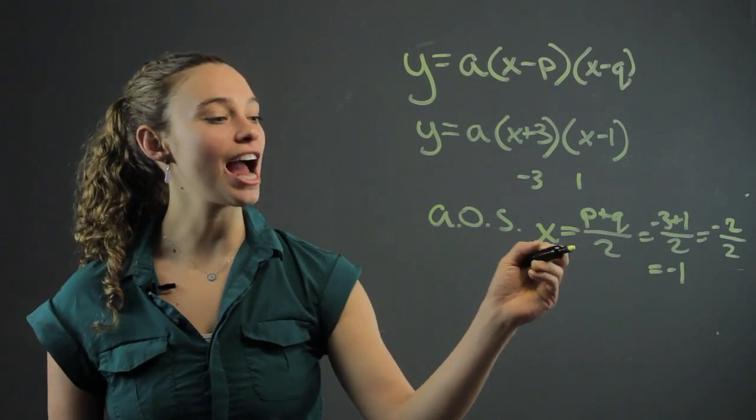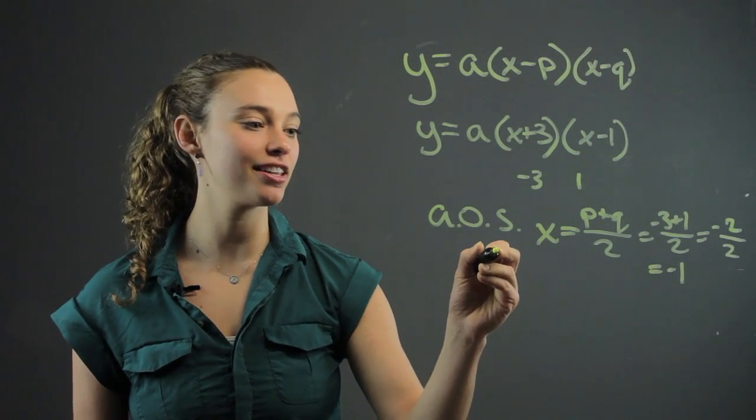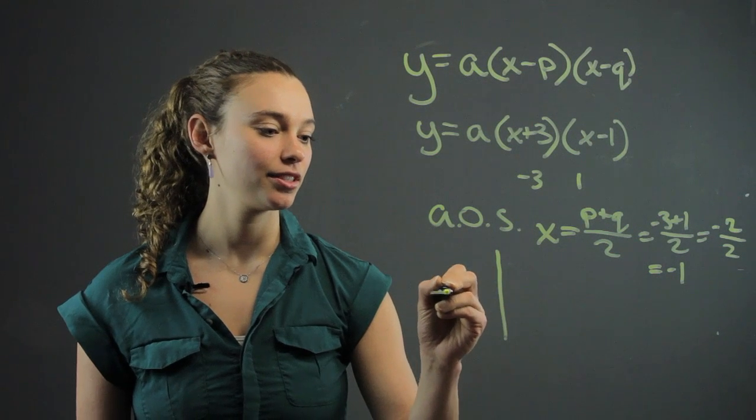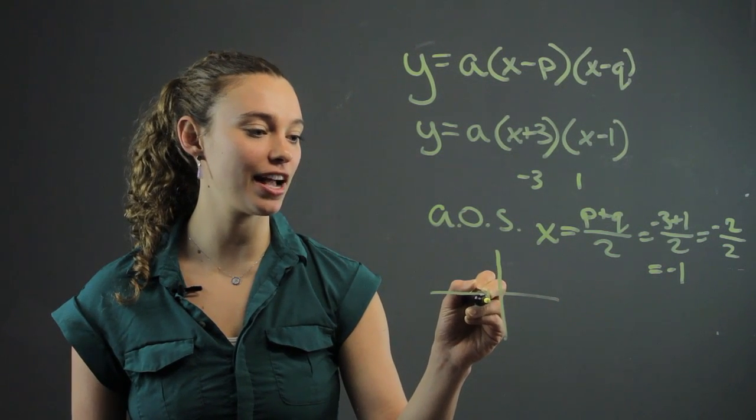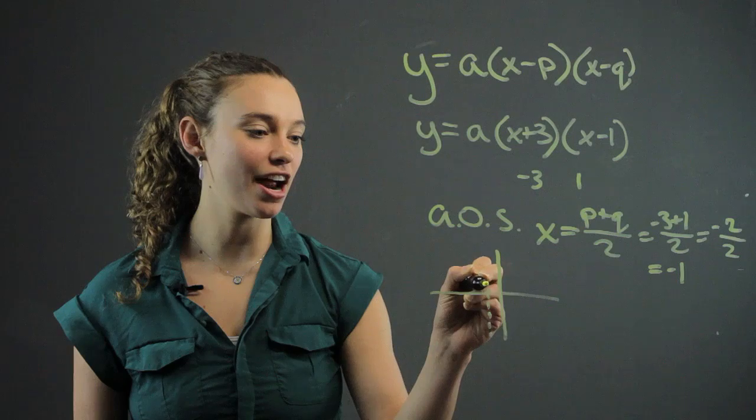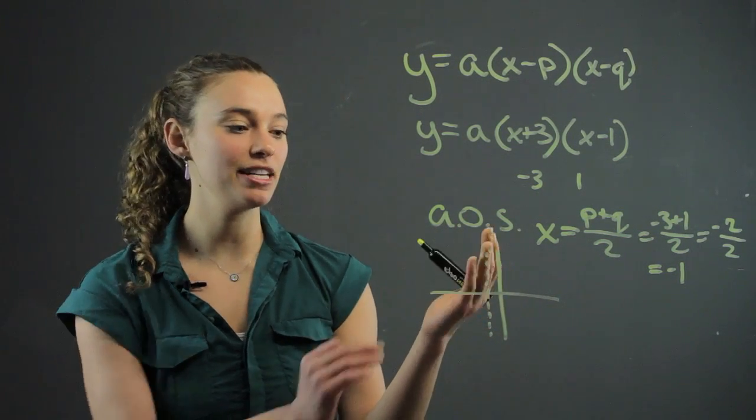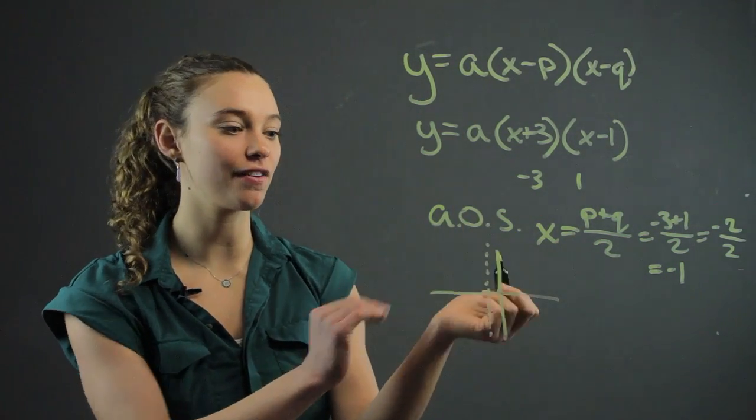So now that we have our axis of symmetry, we can plot the point. So on a graph here, we have negative 1. So this is going to be our axis of symmetry, which means this is where the quadratic can be reflected across.